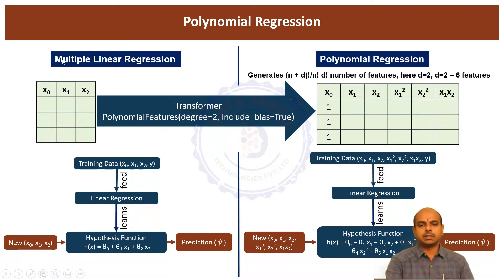If you take your plain data set and then pass it to polynomial features, this is a class present in scikit-learn, and specify the number of degrees and include bias, it is going to create a bigger data set like this.